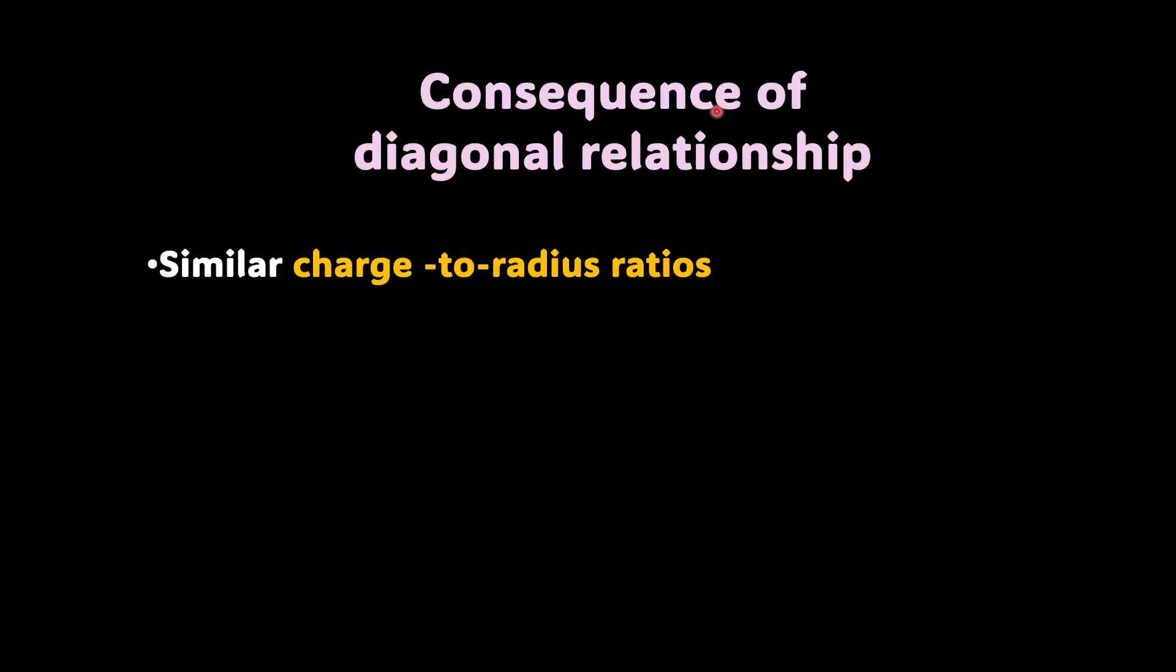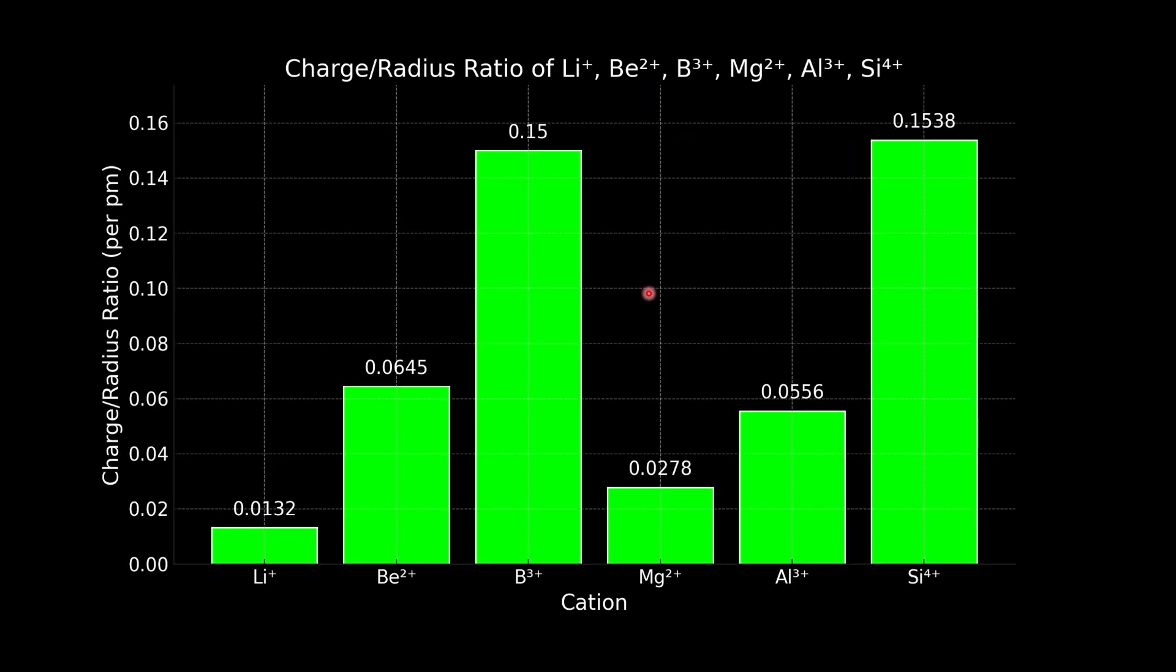they will have similar charge to radius ratio. Let's understand it with the data of charge to radius ratios. Charge by radius ratio of lithium plus, whom should we match it with? It's closest to magnesium 2 plus. And there you go, you found out the diagonal pairs on your own, just by looking at the charge by radius ratio.